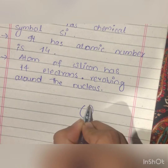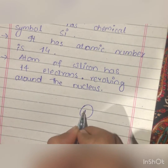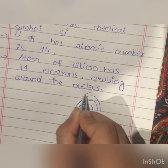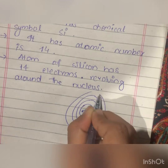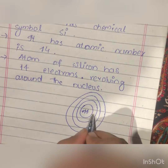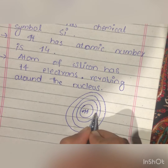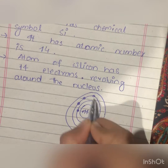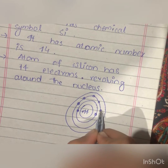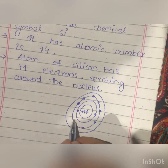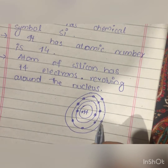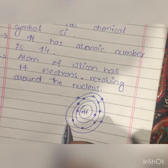If we have this nucleus with 14 protons, now we draw 14 electrons in the shells: 2, then 8, then 1, 2, 3, 4 — making a total of 14 electrons.